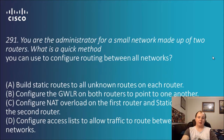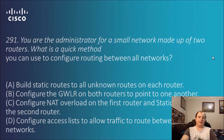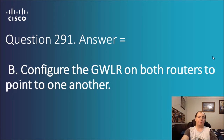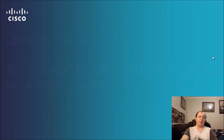Question 291: you are the administrator for a small network made up of two routers. What is a quick method to configure routing between all networks? Options include building static routes, configuring the gateway of last resort on both routers to point to one another, configuring NAT overload, or configuring access lists. The answer is B — configure the gateway of last resort on both routers to point to one another. Router one can go 'where does this go?' and talk to router two, and vice versa. They use each other as a safety net.